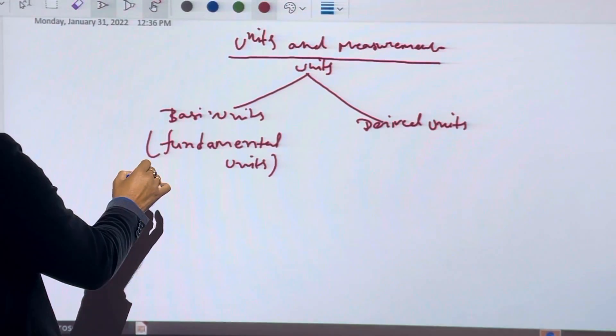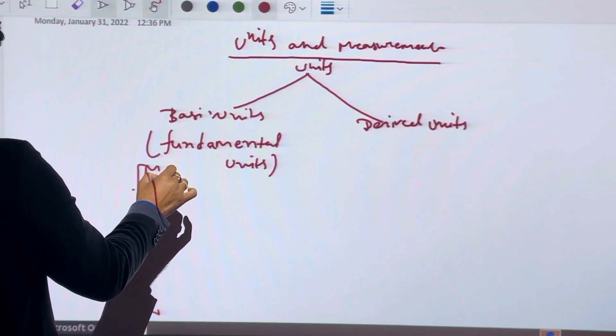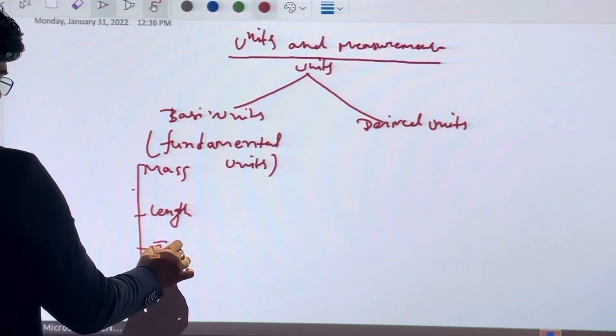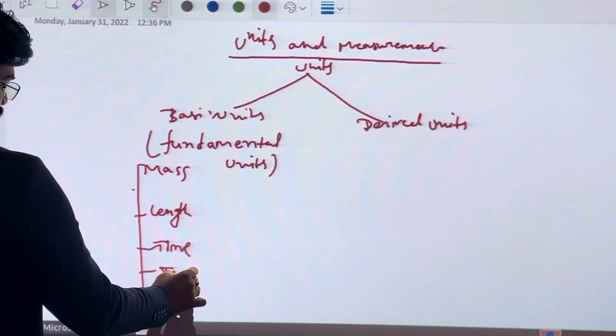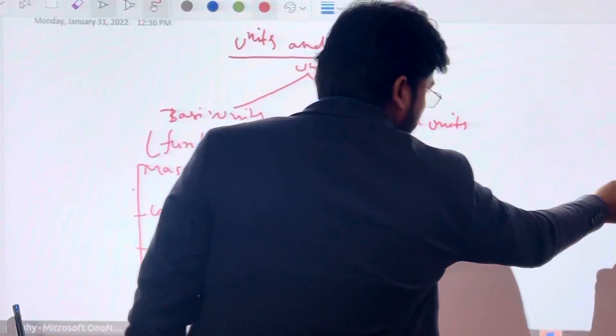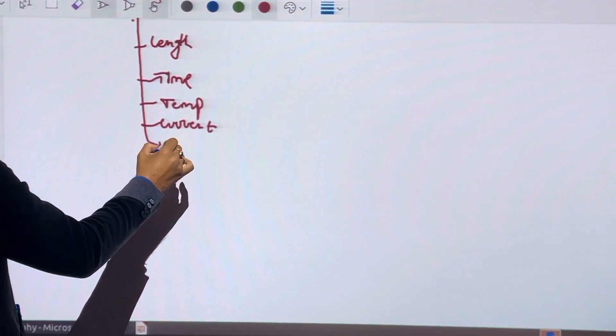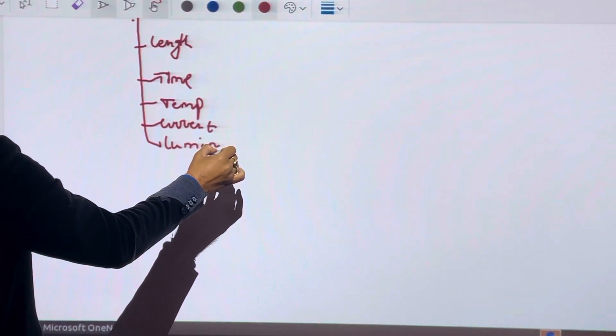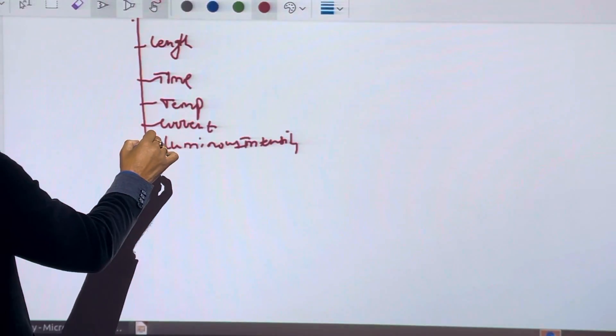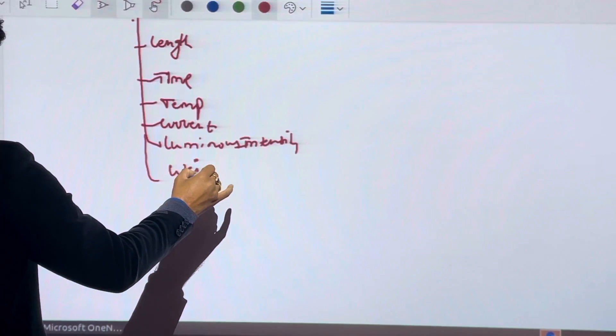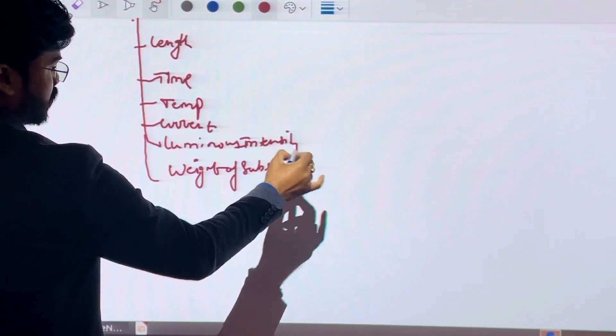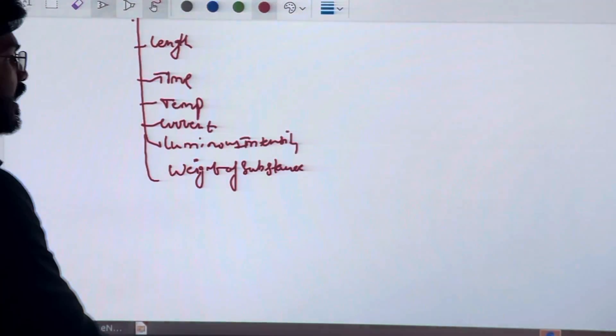Fundamental units are basic units like mass, length, time, temperature, current, luminous intensity, and the seventh, weight of substance. These are seven fundamental and basic units.